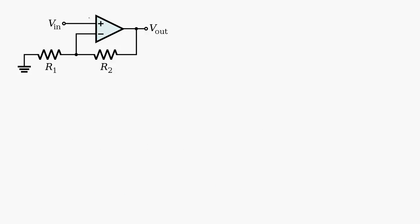Here's the same circuit again, just shrunk down a little bit. I'm going to call this point here my V-plus, my non-inverting input, and this point here my V-minus, my inverting input. The actual input voltage is applied to the non-inverting pin and the output voltage is taken from the output. We have this feedback system through the R2 and R1 network, where V-minus, the inverting input, is taken between the R1 and R2 values.